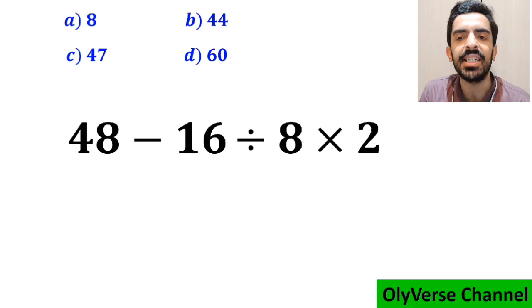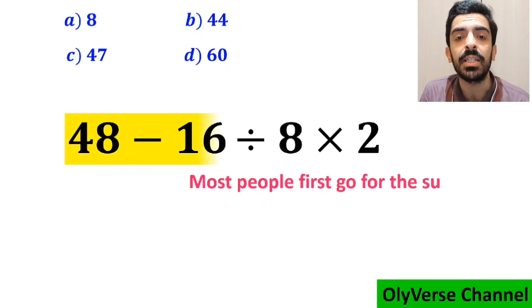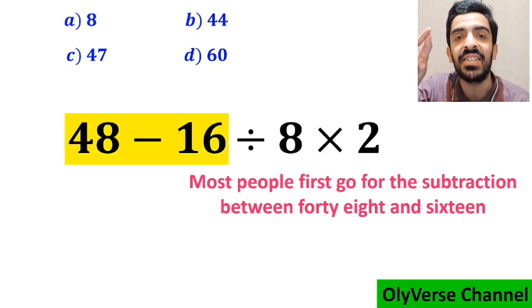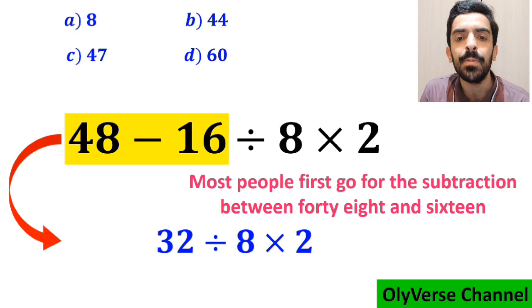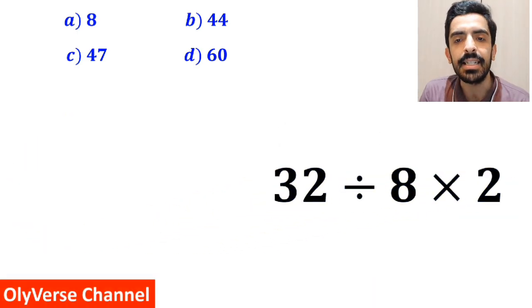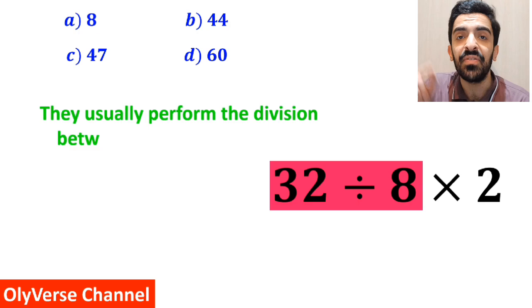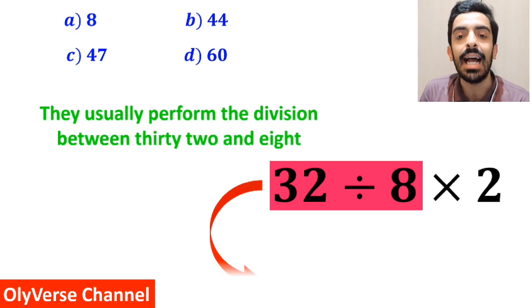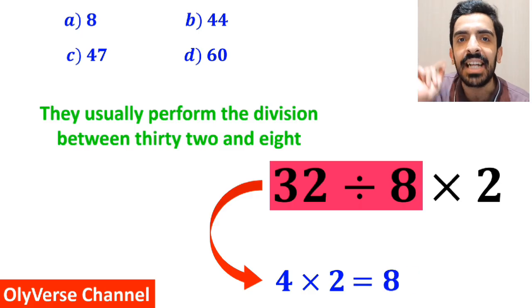To solve this question, most people first go for the subtraction between 48 and 16 and they rewrite this expression as 32 divided by 8 times 2. In the next step, they usually perform the division between 32 and 8 and simplify this expression to 4 multiplied by 2, which finally gives them the answer 8.